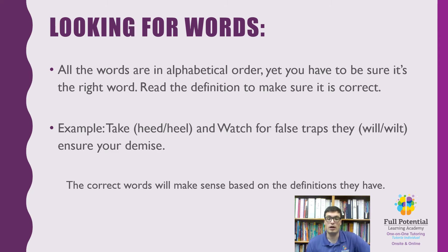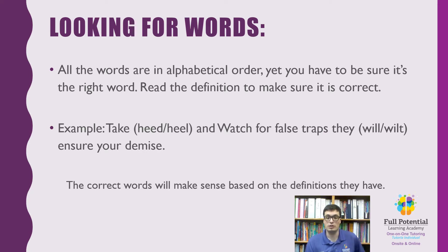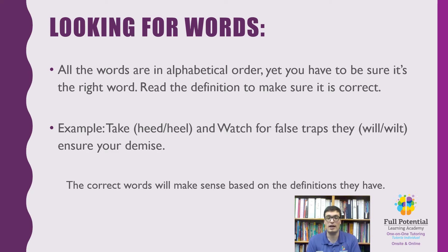For example, below we have some words that could be confused. Take 'heed' and 'heal,' and watch out for false traps — they will ensure your demise. Now, if you didn't know the meaning of these words, you could make a mistake in choosing the wrong one. For this example, you need to choose the words 'heed' and 'will': 'Take heed and watch out for false traps. They will ensure your demise.' By choosing the right words, you make the sentence make sense and convey the best meaning.